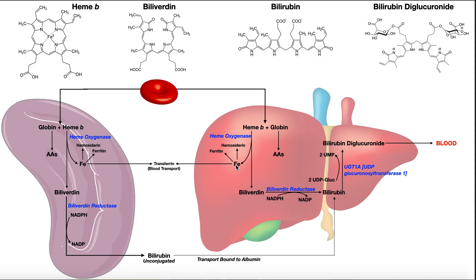Regardless of whether it's the spleen or the liver, this iron is either stored as ferritin or hemocytorin, or it's moved into the blood bound to a protein called transferrin, which allows the iron to be transported to different tissues of the body. So iron is either stored in the liver or spleen, or it's transported to other tissues. What's also interesting about this reaction is that heme oxygenase releases one molecule of carbon monoxide. Carbon monoxide in large amounts will kill you, but in small amounts naturally produced by this enzyme, it actually plays an important anti-inflammatory and vasodilatory role, very similar to nitric oxide — but we'll cover that in a later video.